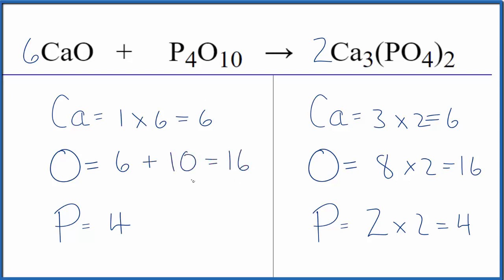And we're done — this equation's balanced. The key here: leave oxygen until last; that usually works best. This is Dr. B with the balanced equation for CaO plus P4O10. Thanks for watching.